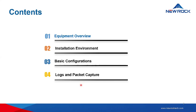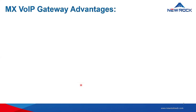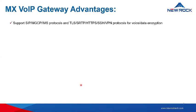So let's go over the MXVIP Gateway advantages. NewRock MX Gateway supports a wide range of access gateway applications. The first advantage is it supports SIP, MGCP, and IMS protocols, as well as TLS, SRTP, HTTPS, SSH, and VPN protocols for voice and data encryption. Our gateways are typically used to connect telephone terminals, legacy fax terminals, and PBX or key systems to IMS, SIP, NGCP, and IP networks.